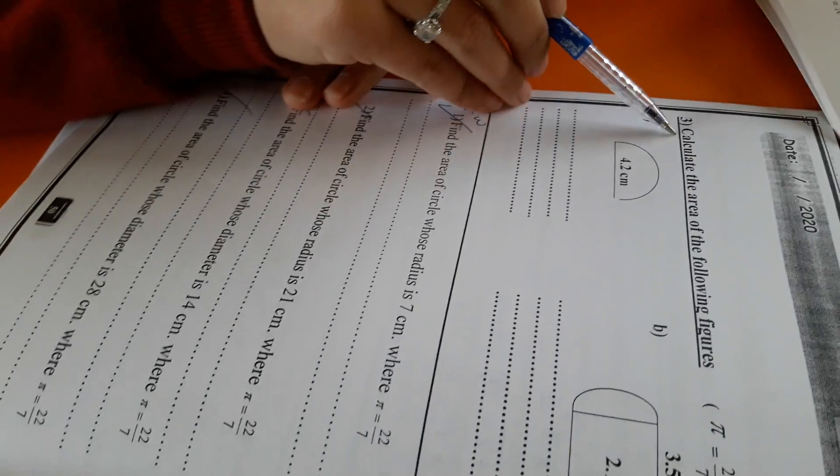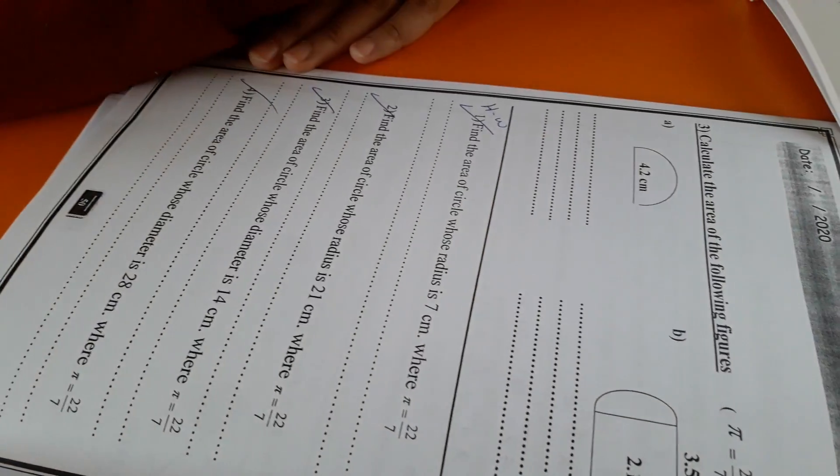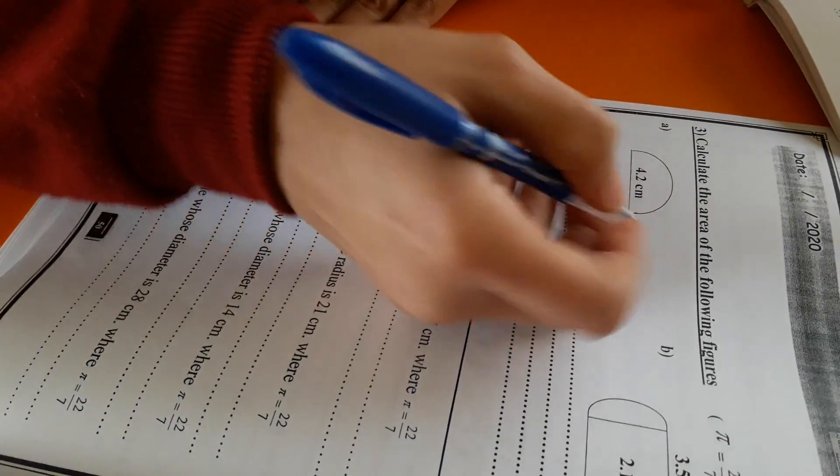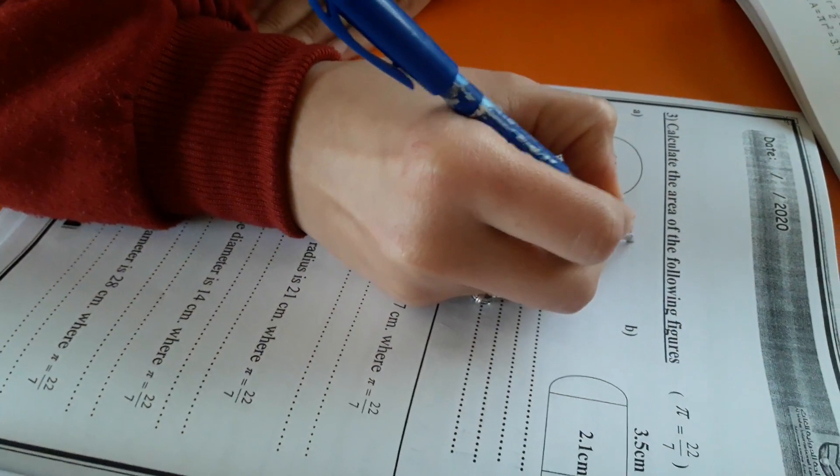Okay, open your booklet. Page 50, exercise number 3, number 8. Calculate the area of the following figure. This semi-circle. This what? Semi-circle.